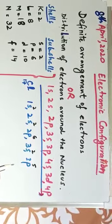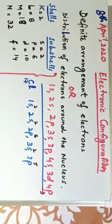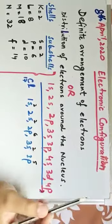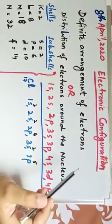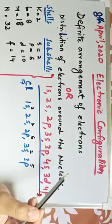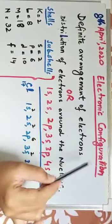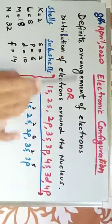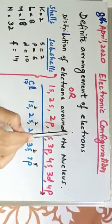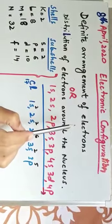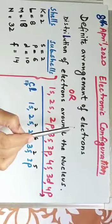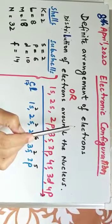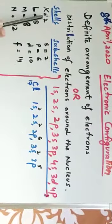So I'm going to continue from where I left the topic in Zoom class, the remaining part of the lesson. To write electronic configuration, first of all, what is electronic configuration? Electronic configuration is definite arrangement of electrons, or in other words, distribution of electrons in shells or subshells.